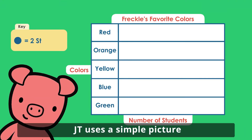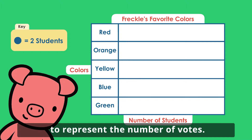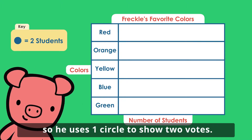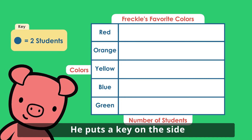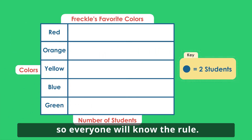JT uses a simple picture to represent the number of votes. He is not sure he will have enough space, so he uses one circle to show two votes. He puts a key on the side so everyone will know the rule.